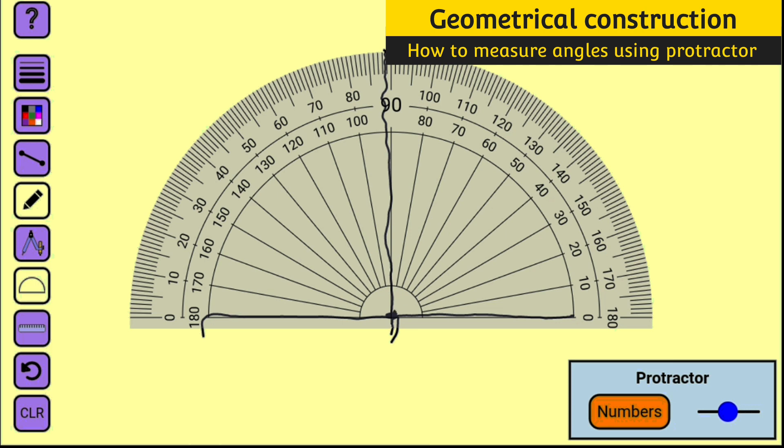And this point of intersection is exactly where you have to place your protractor on the origin of the angle you want to measure.